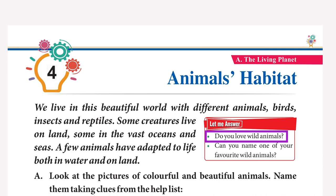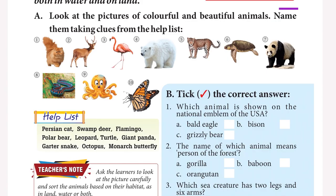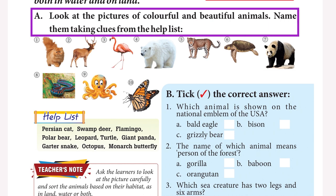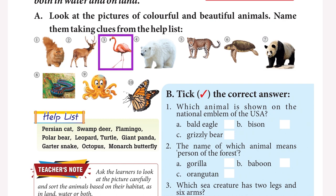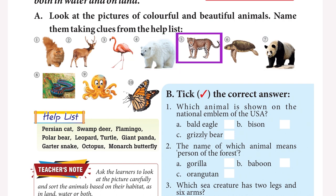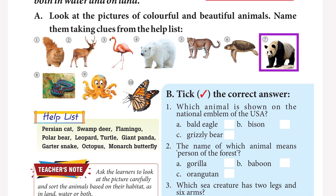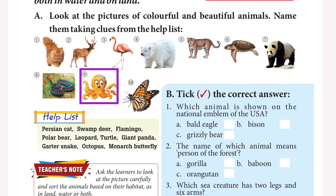Do you love wild animals? Can you name one of your favourite wild animals? Look at the pictures of colourful and beautiful animals. Name them using the help list: Persian cat, Swamp deer, Flamingo, Polar bear, Leopard, Turtle, Giant panda, Garter snake, Octopus, Monarch butterfly.